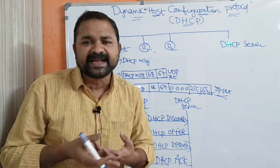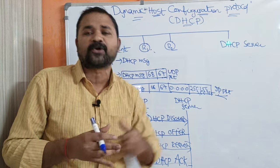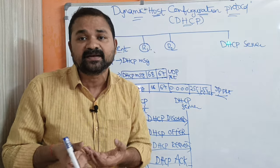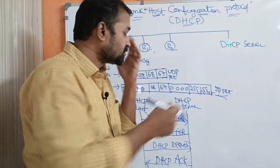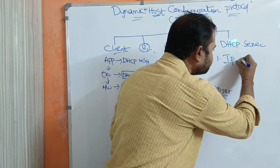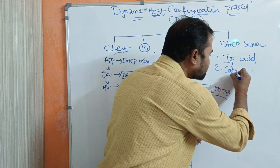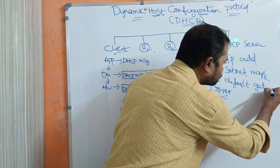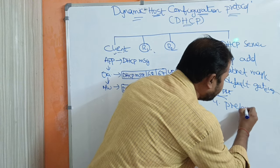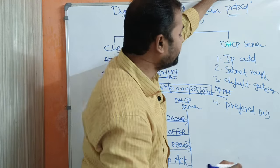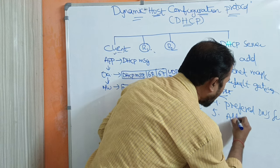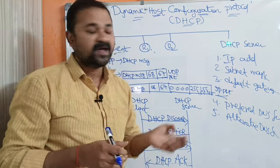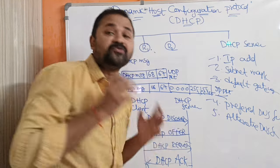If you want to use the internet and you don't use DHCP protocol, then the network administrator has to enter the IP address details manually. The network people have to enter: IP address, subnet mask, default gateway, preferred DNS server, and alternative DNS server. So if you don't use DHCP protocol, the network people have to enter these five details manually in each computer.